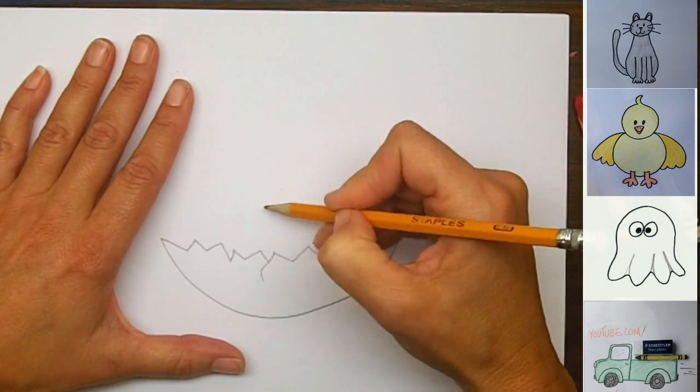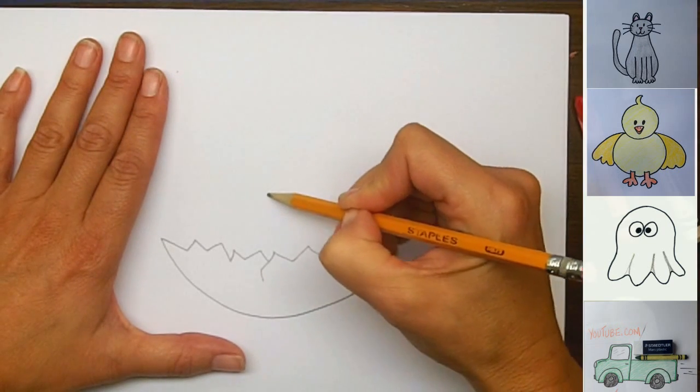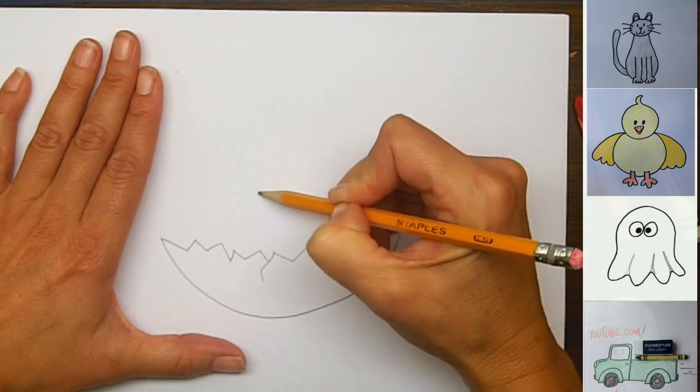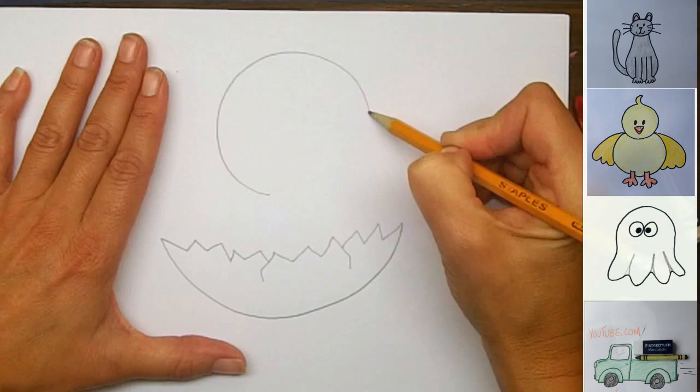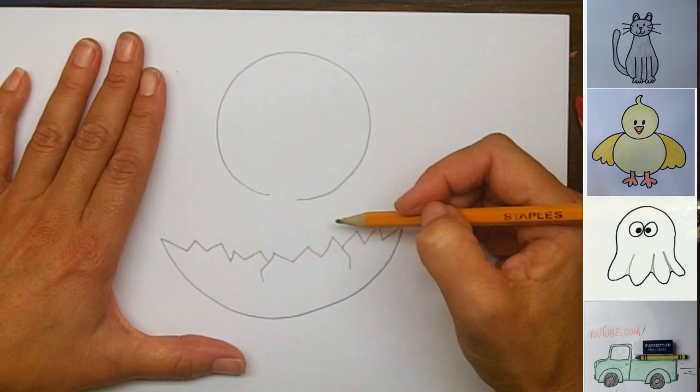So I'm going to start right here. I'm going to go from his neck around in a big circle. So here I go, around in a circle, and stopping when I get back to his neck. Alright, that's his head.